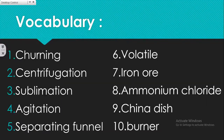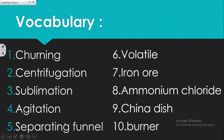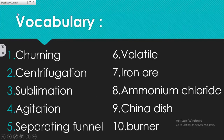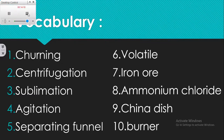Let us recall the new terms we have learned today: churning, centrifugation, sublimation, agitation, separating funnel, volatile, iron ore, ammonium chloride, china dish, and burner. I hope you are now aware of the separation methods learned in today's class. The exploration never ends — we will explore new concepts in the upcoming class.